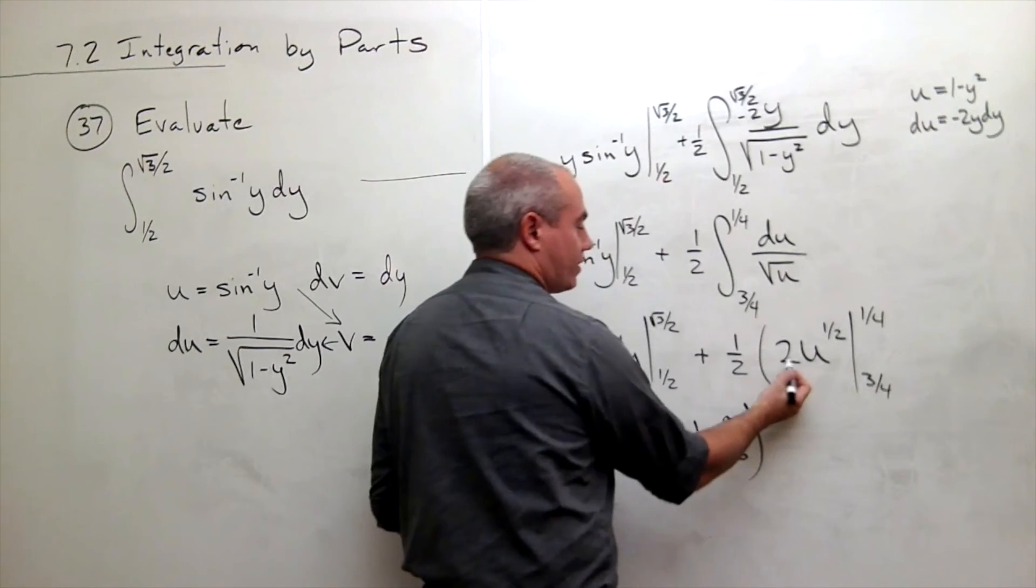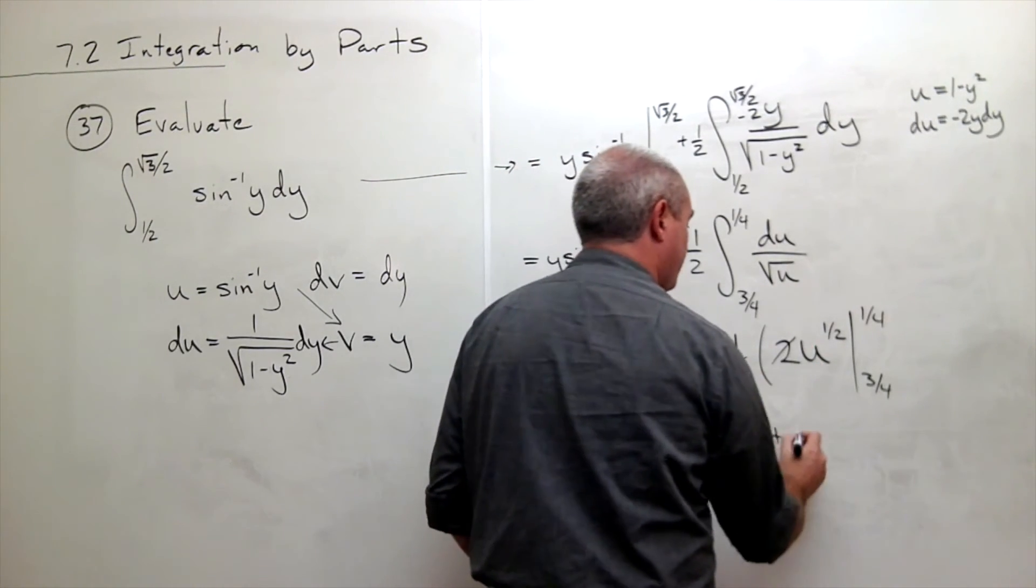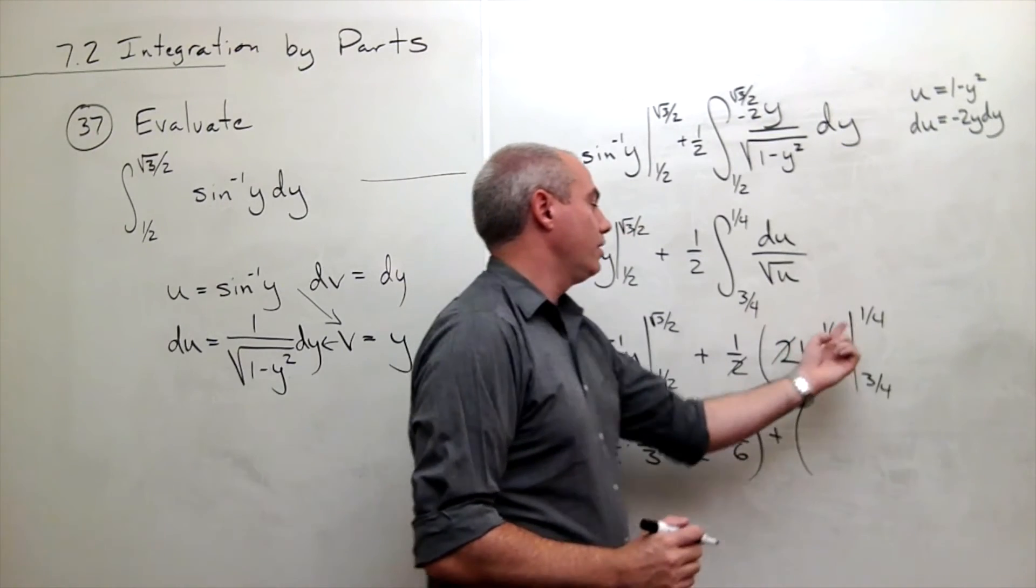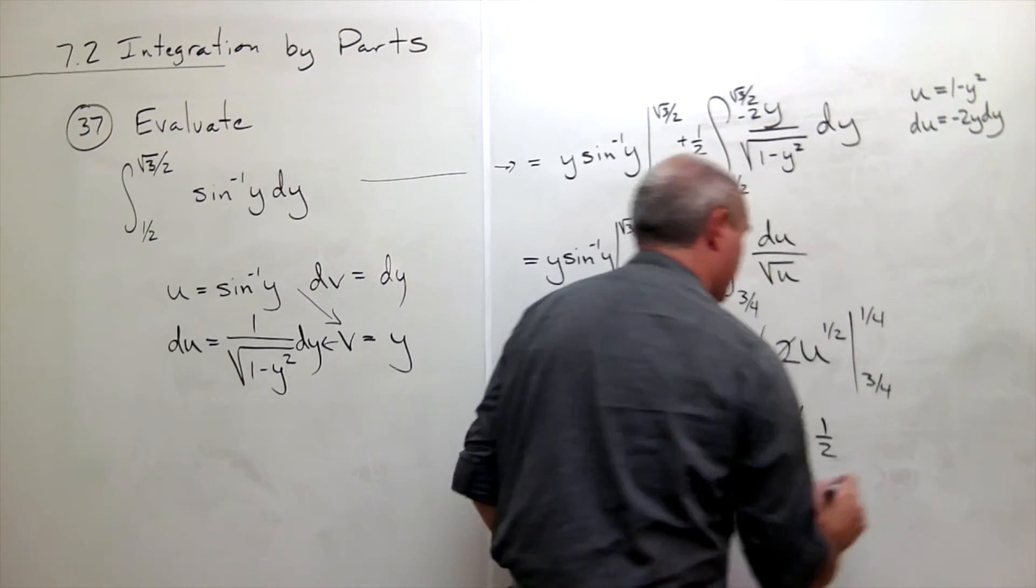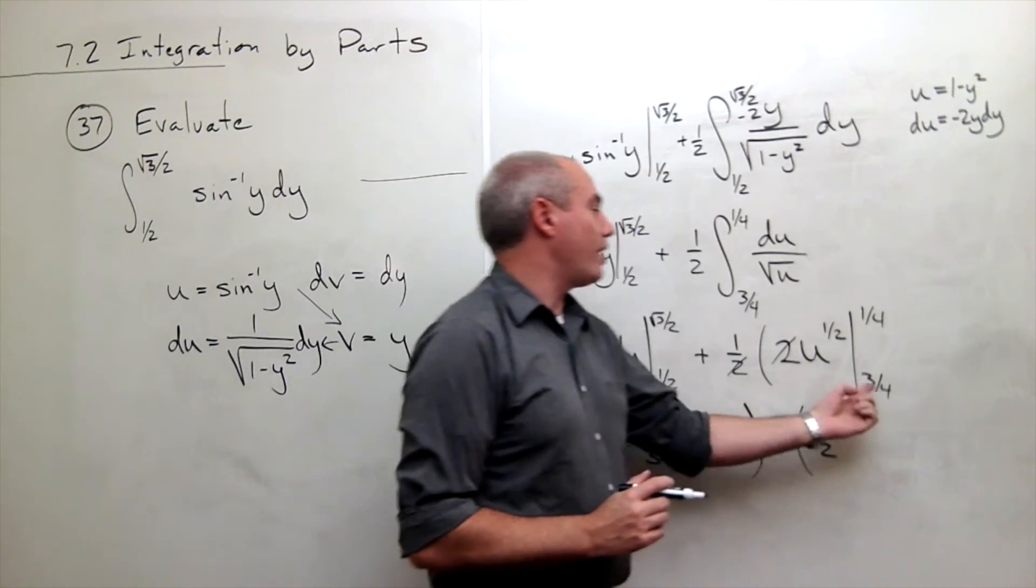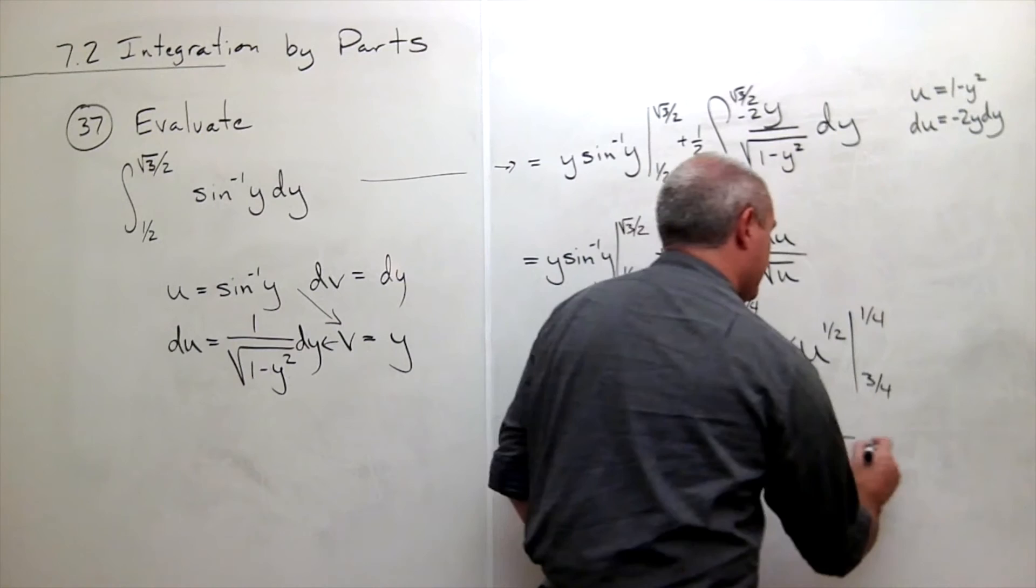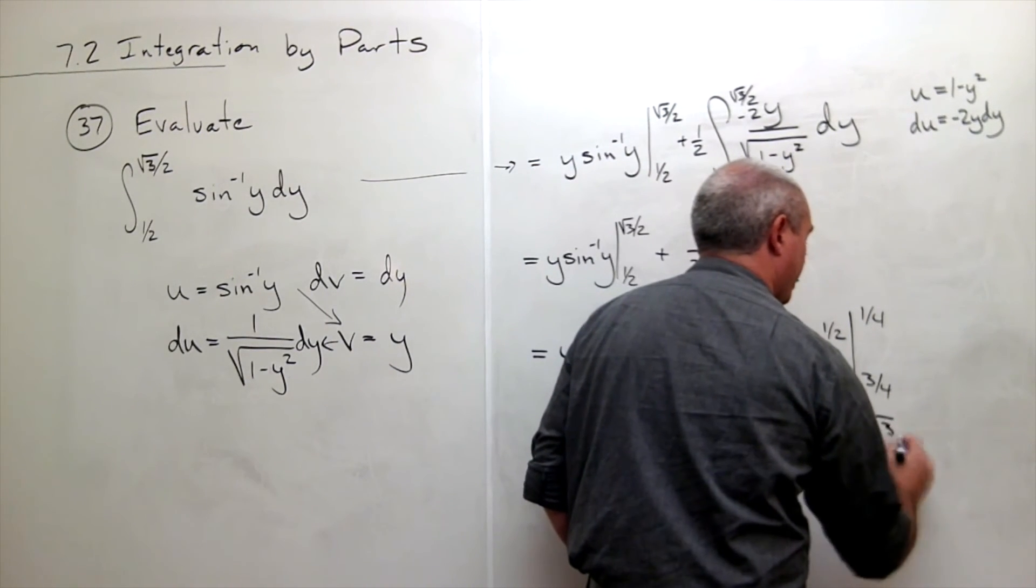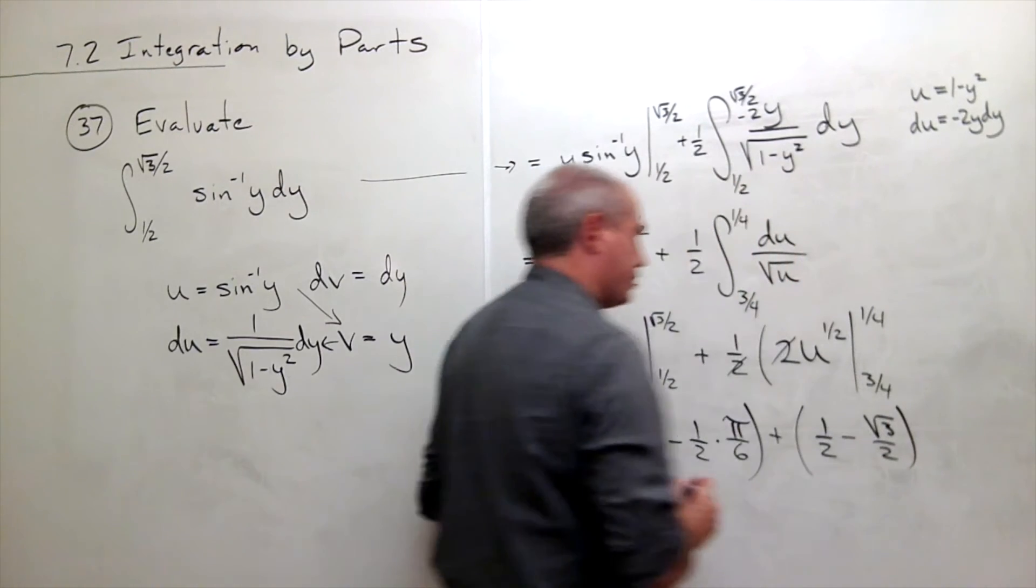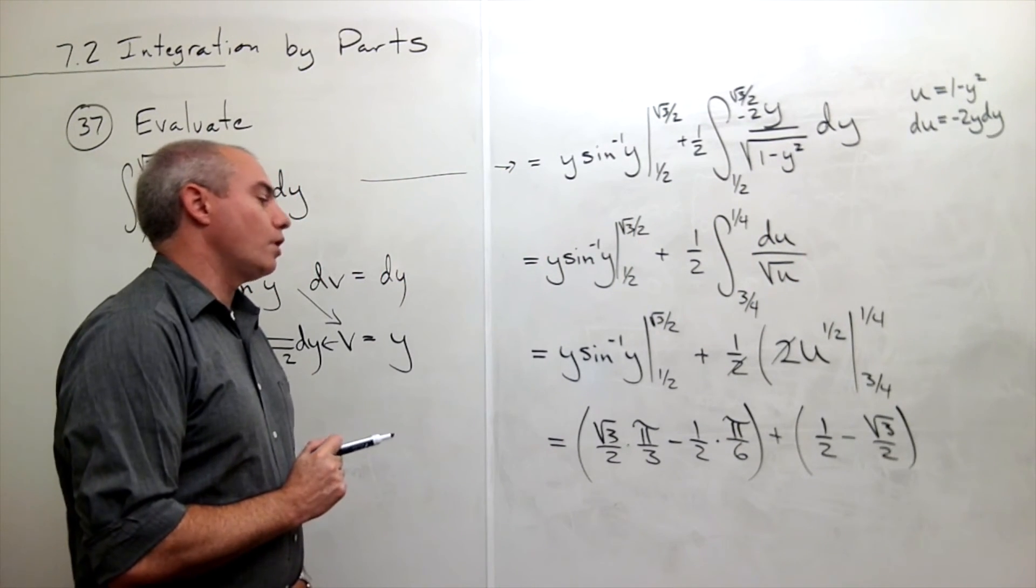Plus, notice I have a 2 on top, a 2 on bottom. Those can cancel. So I get plus. Plug in the square root of 1 fourth is 1 half. And the square root of 3 fourths is, I need to subtract this, plus, is the square root of 3 over 2.